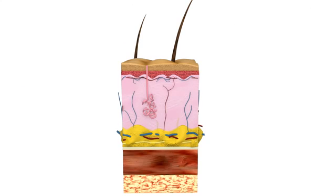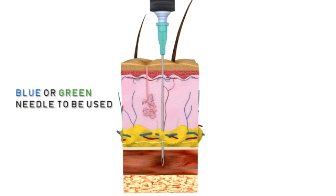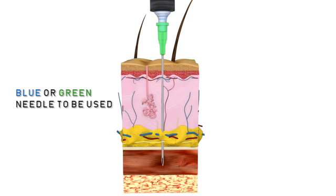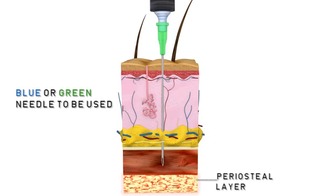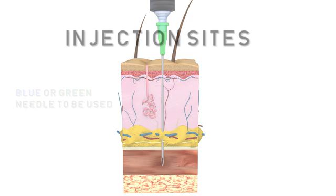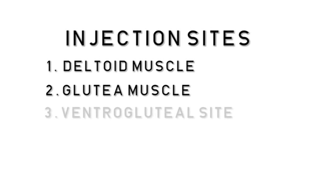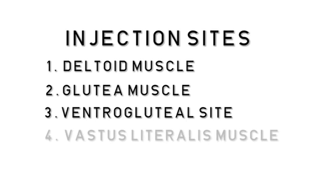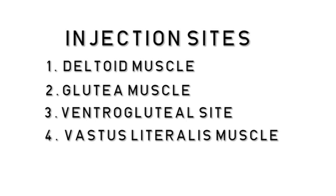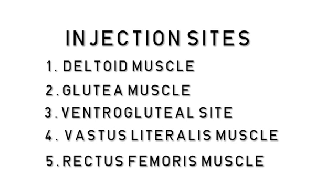The intramuscular route is used when a rapid systematic action is required. The nurse must consider whether a blue or a green needle should be used to access the muscle of the patient without hitting the periostal layer of the bone. The intramuscular injection can be injected on five sites: the deltoid muscle, the gluteal muscle, the ventrogluteal site, the vastus lateralis muscle, and the rectus femoris muscle.